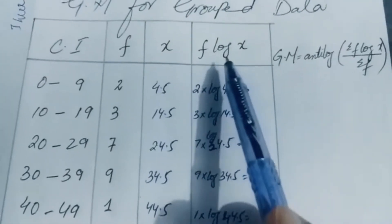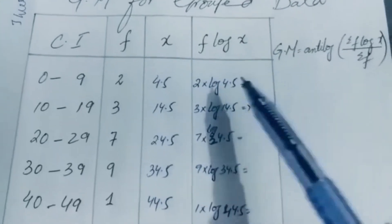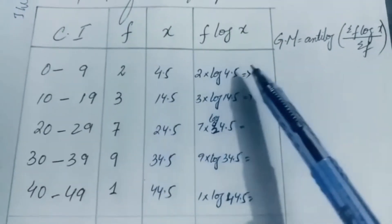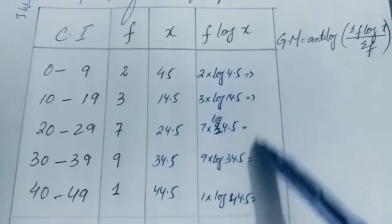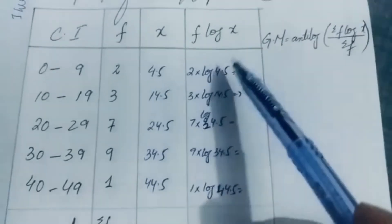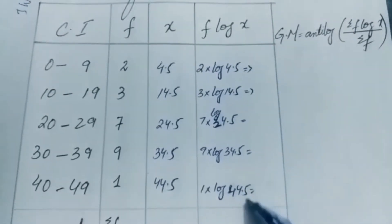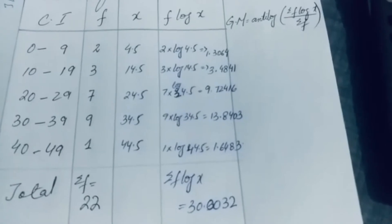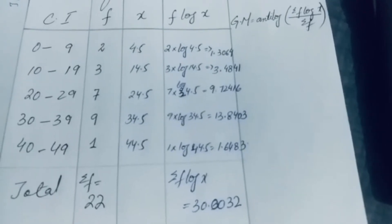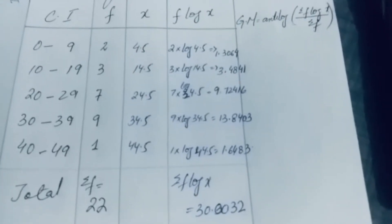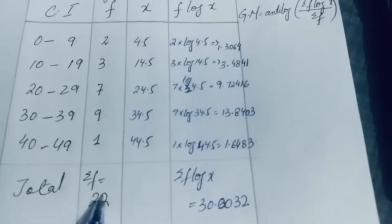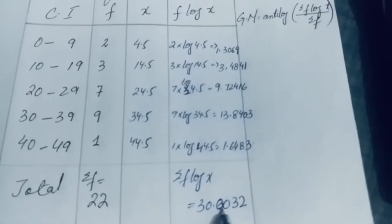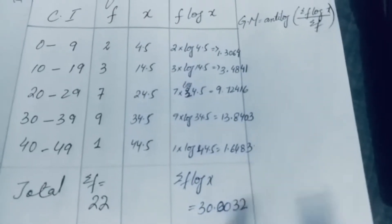We generate the column of f log x and calculate all values using a calculator. All values of f log x are now written. Summation f equals 22 and summation f log x equals 30.0032.